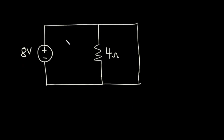Now, let's move ahead and solve a few examples. Let's say we are given a circuit and we have to find the total resistance for it. In this circuit, we have an 8-volt voltage source connected across a 4-ohm resistor, and we also have a thin wire connected across the 4-ohm resistor. Is this a short circuit, and if yes, how do we solve for the total resistance?